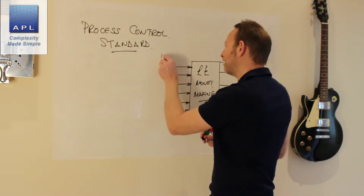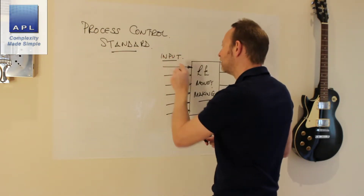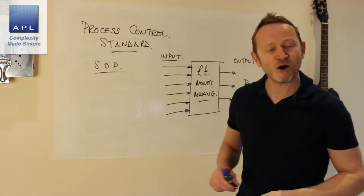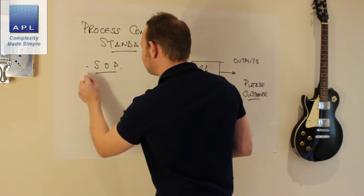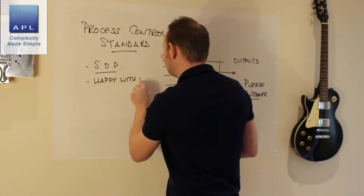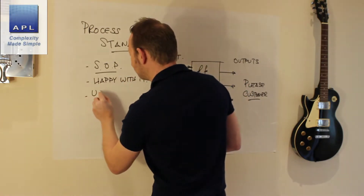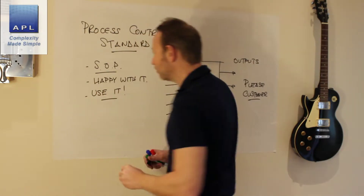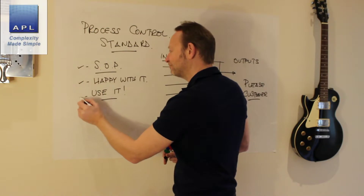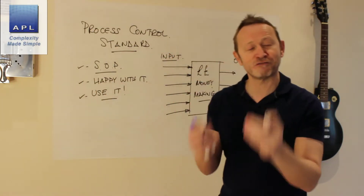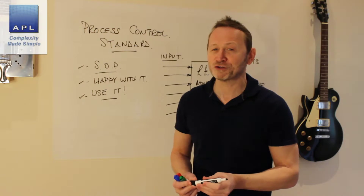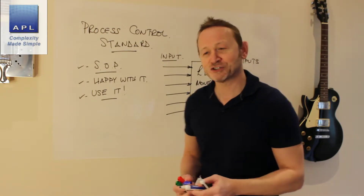To have a variable, to have an input under control, you should have a standard — I'm going to call it a standard operating procedure. You should be happy with the standard, and finally, you should use it. If you don't get a tick in all three of those, then you don't have the variable under control. You must get a tick in all three regions in order to say that the process is under control.